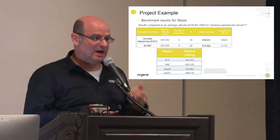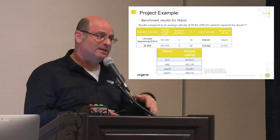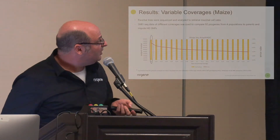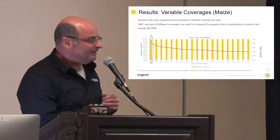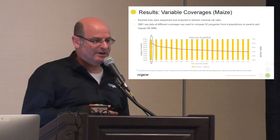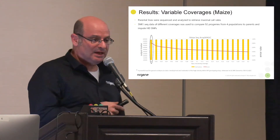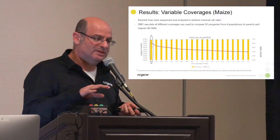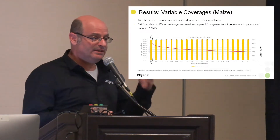We took a real RIL population from parental lines in maize that we have in our database and used iGenomeX library prep — a new, very cost-effective whole-genome sequencing prep — to prepare the libraries. The question is: how low can we drive the sequencing coverage for each line and still get very nice imputation? We tried different coverages, helped by collaborators including the University of Illinois and Illumina, covering the lines after iGenomeX library prep and then reducing coverage to see how well we perform.